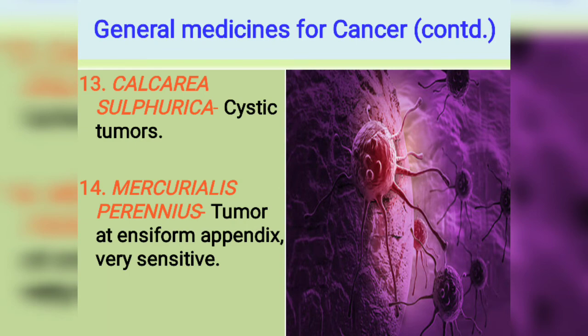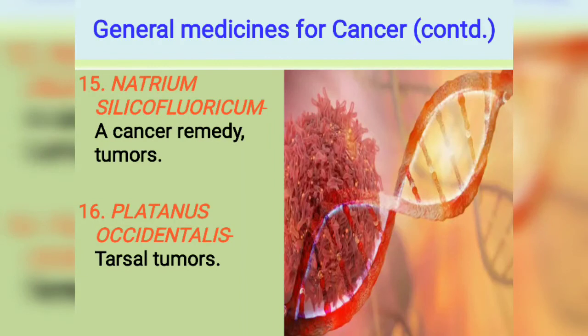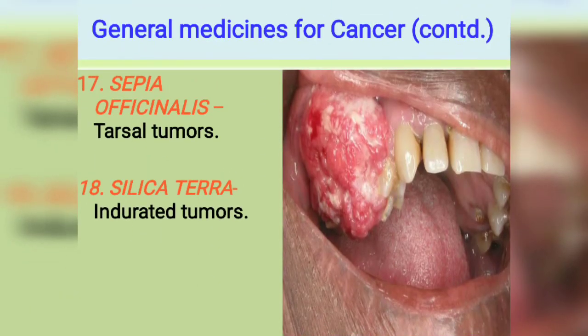Next is Natrum Silico Fluoricum — listed as a cancer remedy for tumors; there is little mention so more research is needed. Next is Platanus Occidentalis for tarsal tumors — tarsal tumors especially occur in the eyelids. Many medicines address tarsal tumors, which you can see listed.